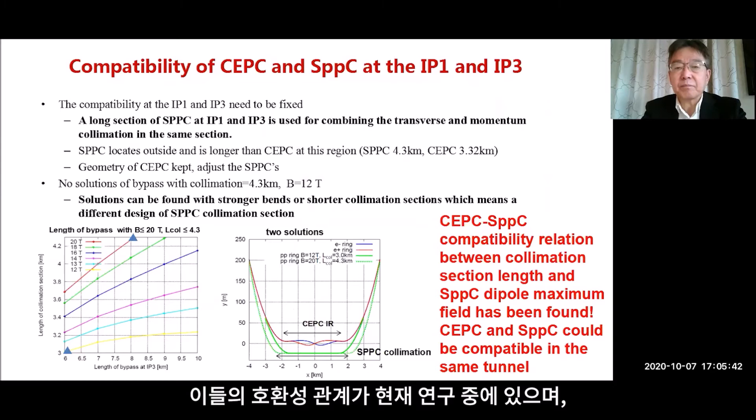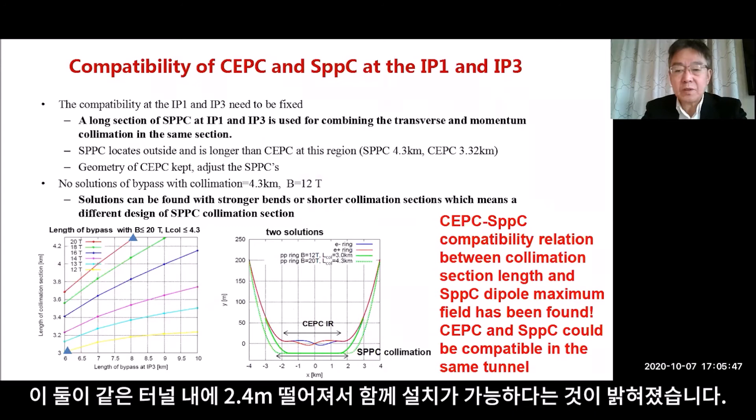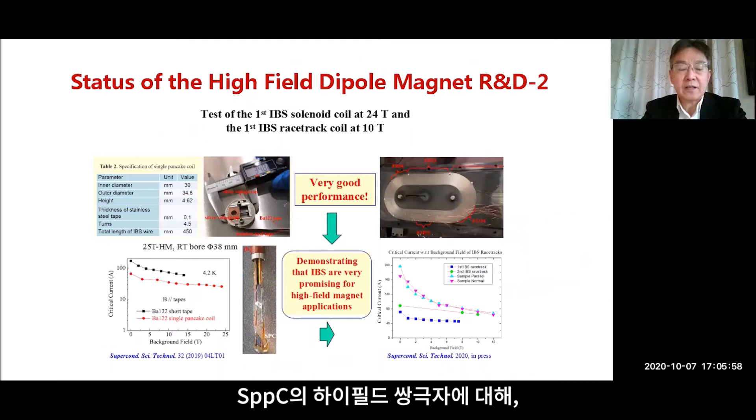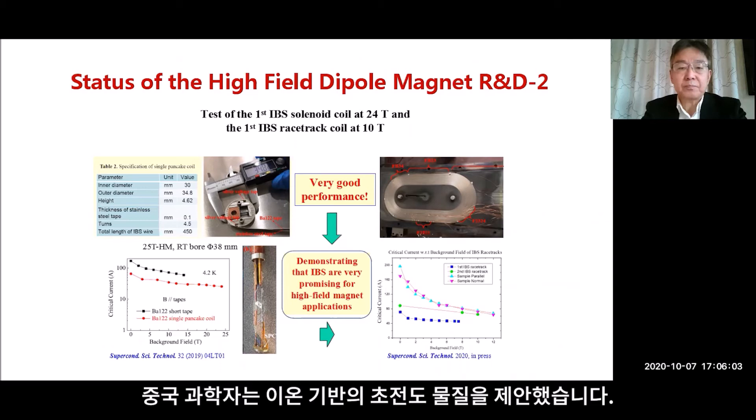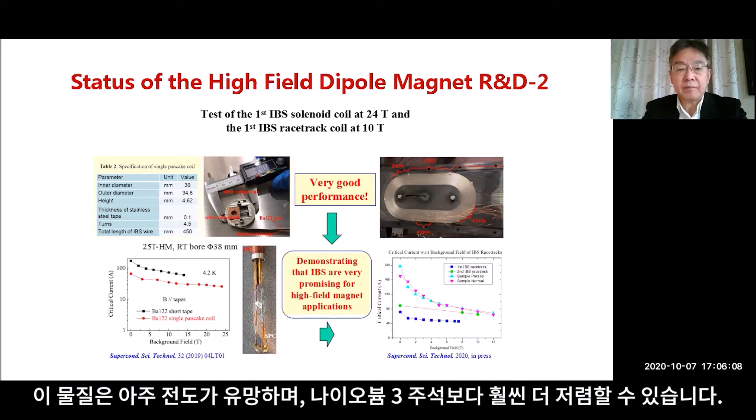Because CEPC and SPPC are both machines in the same tunnel, they have to satisfy some constraints. The so-called compatibility relation is under study, and it shows that the two machines can be placed in the same tunnel separated by 2.4 meters. For the high-field dipoles of SPPC, Chinese scientists proposed iron-based superconducting material.